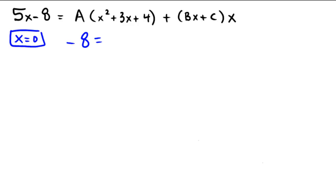On the right, 0 plus 0 plus 4 is 4 multiplied against the A. And notice that since x is 0, this part is just going to be eliminated, and so we just get negative 8 equals 4A. And so A equals negative 2.